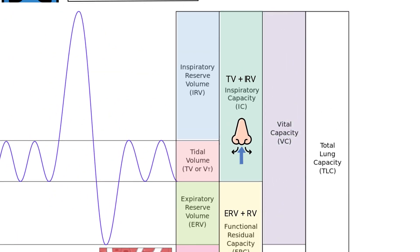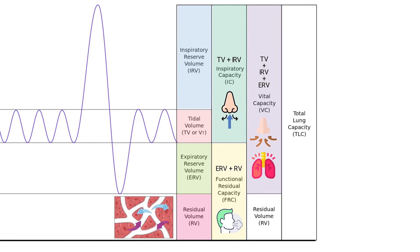Vital capacity is the total volume of air that can be forcibly exhaled after a maximal inhalation. This capacity gives insight into the overall health and function of the respiratory muscles. Vital capacity can be calculated by adding the tidal volume to the inspiratory reserve volume and the expiratory reserve volume.